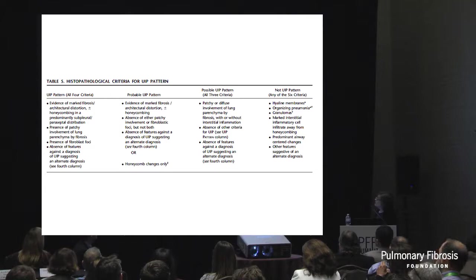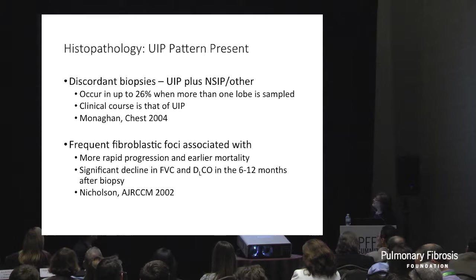The probable and possible UIP categories are variations on a theme of lacking some criteria, or the situation in which only honeycomb changes are present on the biopsy.